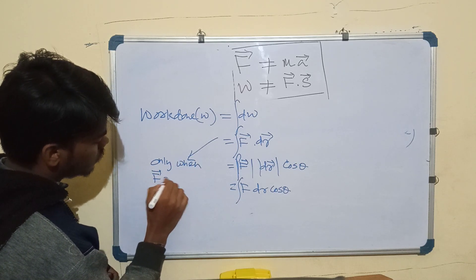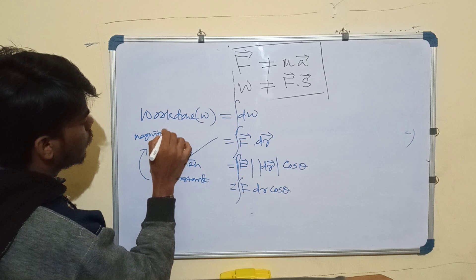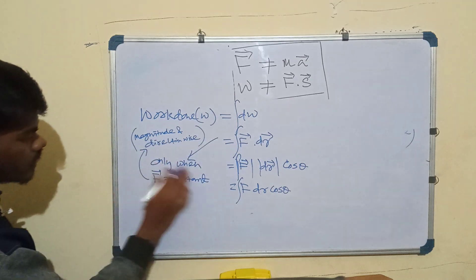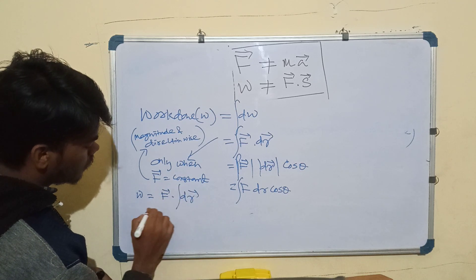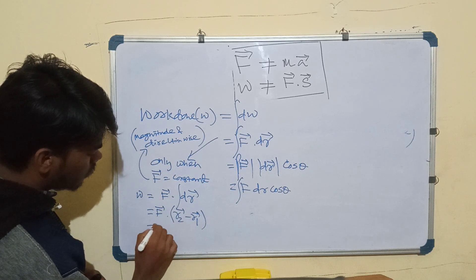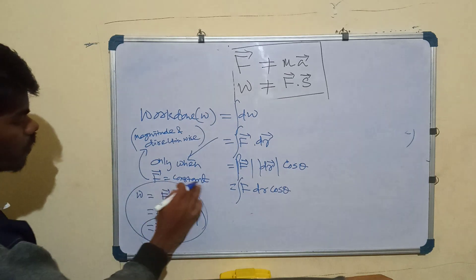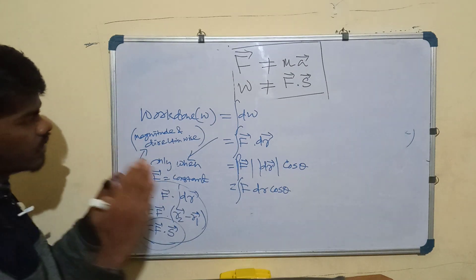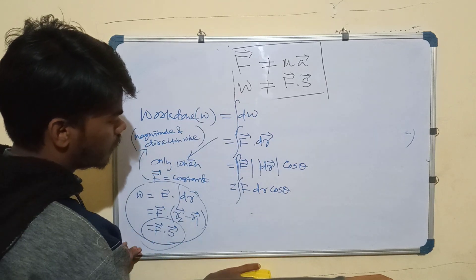Only when the force vector is constant — both in magnitude and direction — can we write W as F dot the integral of dr, which gives F dot (r2 minus r1), and that equals F dot s. You must keep in mind that W equals F dot s is valid only when the force vector is constant in both magnitude and direction; otherwise we cannot apply this formula.